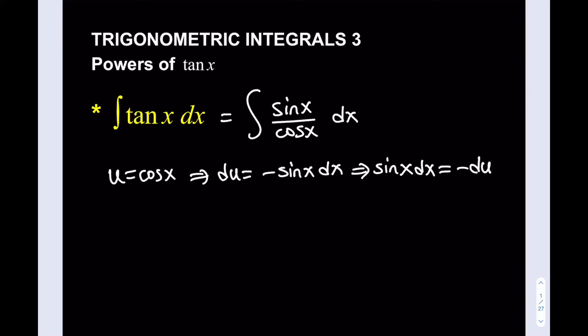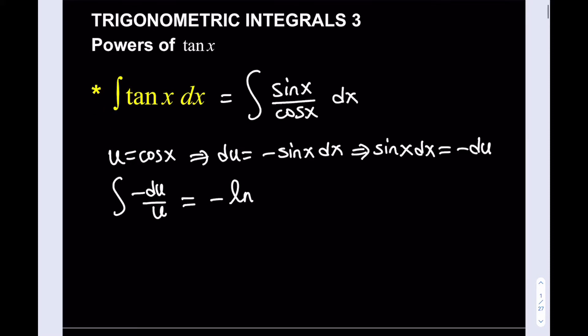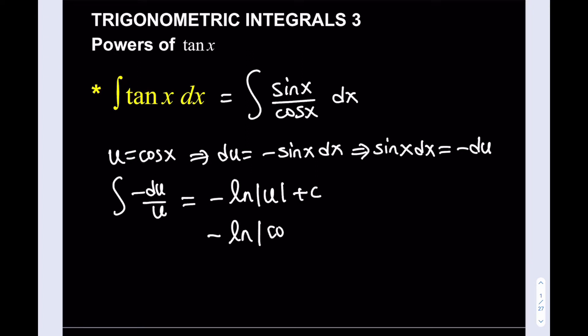Since I have cosine x at the bottom, it makes sense to call that u. If you call u equals sine x, you're not going to get the du because cosine x will be in the denominator — that's why I picked cosine x. Substituting everything gives me negative du over u, which equals negative ln|u| plus c. Back-substituting u equals cosine x, the integral of tangent x dx equals negative ln|cos x| plus c.